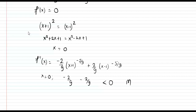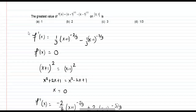Since f''(0) is negative, x = 0 is a maximum point. So the maximum occurs at x = 0.